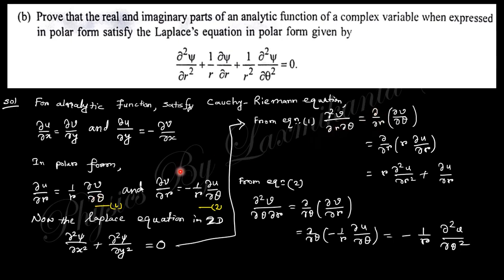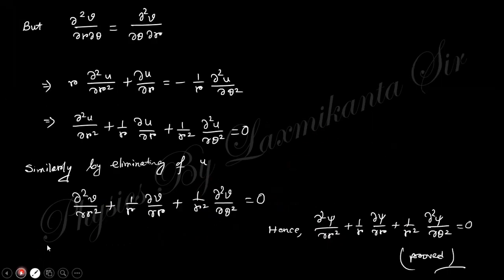∂v/∂θ equals r·∂u/∂r. Taking the derivative and similarly for the other equation, ∂²v/(∂θ ∂r), and taking the partial derivative with respect to θ — since these two mixed partials are equal, combining them and dividing by r gives the polar form Laplace equation for u.